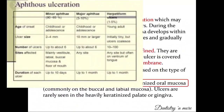In minor aphthous ulcers, the size is around 2 to 4 mm in diameter, they heal without any scarring, and they involve the non-keratinized oral mucosa. In major aphthous ulcers, the keratinized areas such as the palate and dorsum of the tongue are involved. These are larger in size, heal over a longer duration of around 2 to 6 weeks, and heal with scarring. Herpetiform ulcers are the third type — they must not be confused with herpes simplex virus infections.